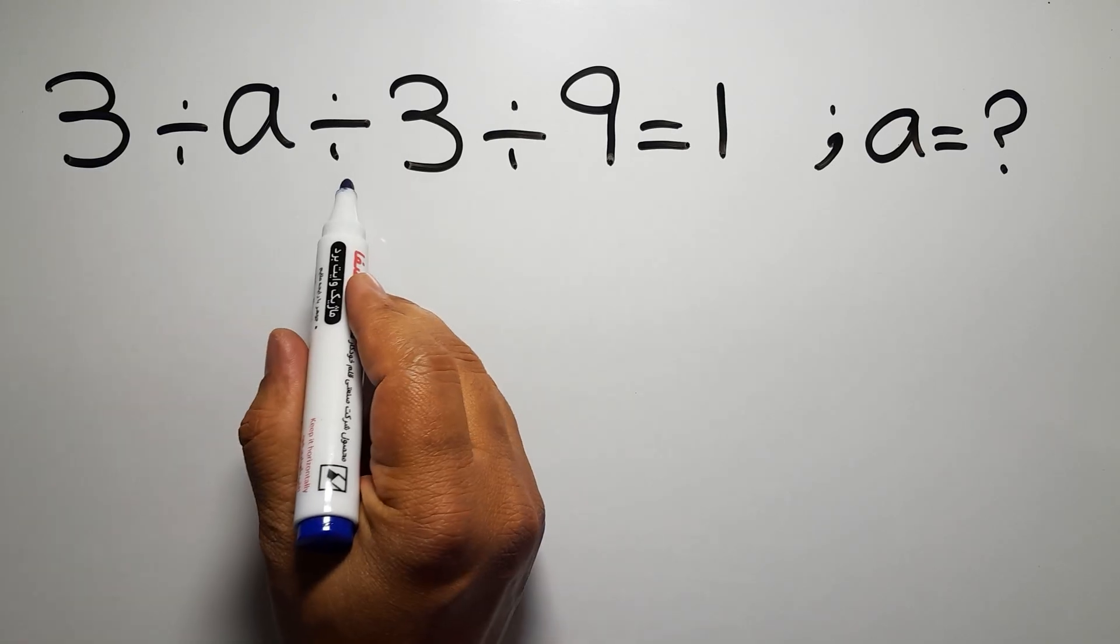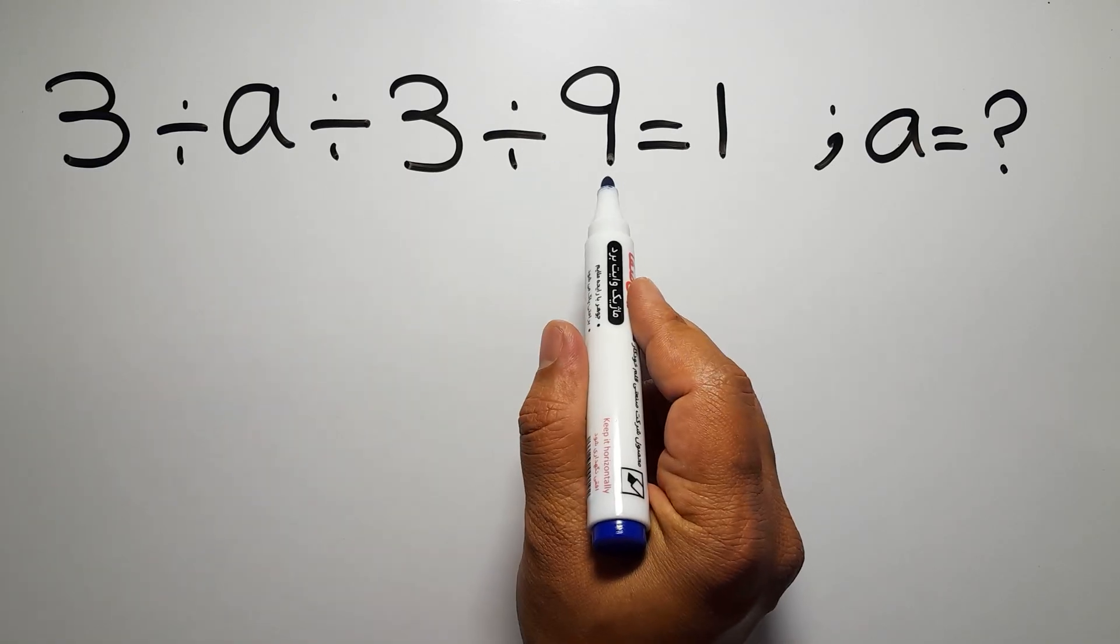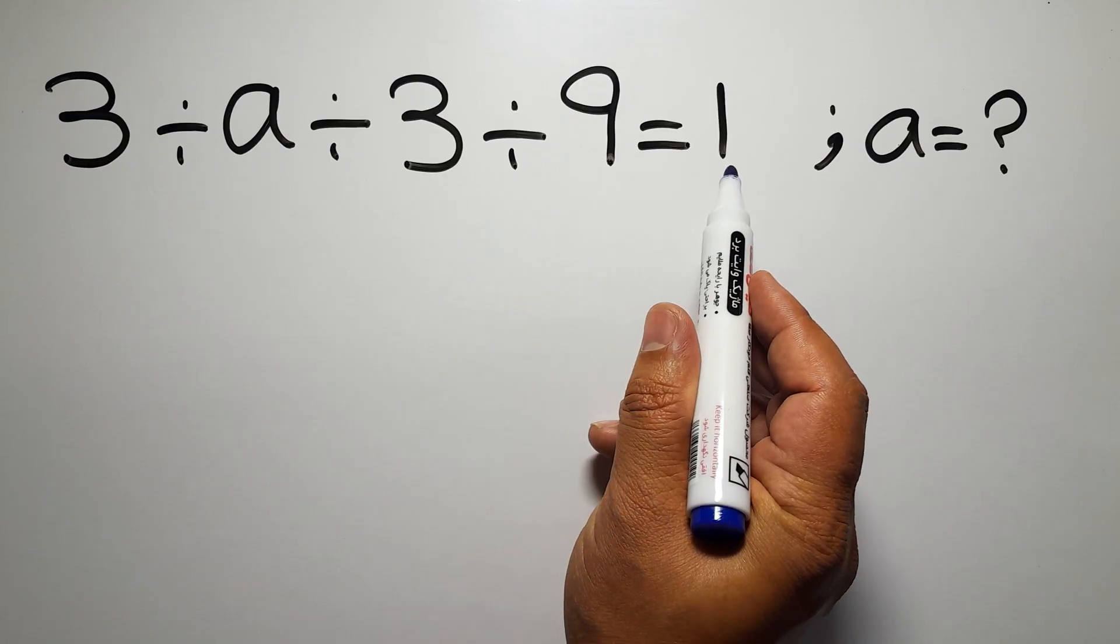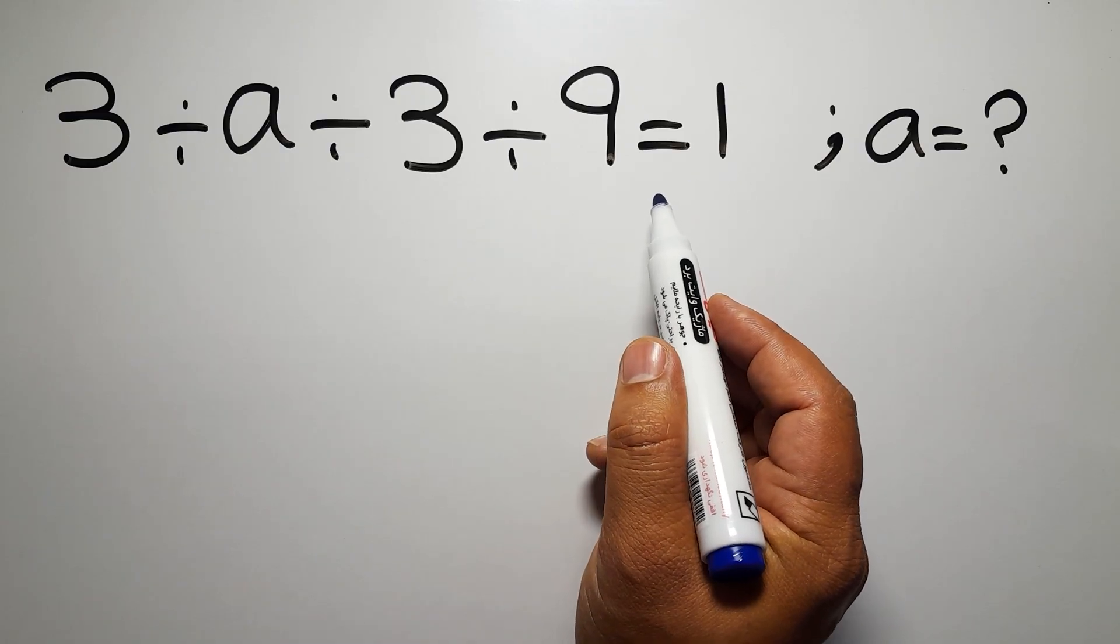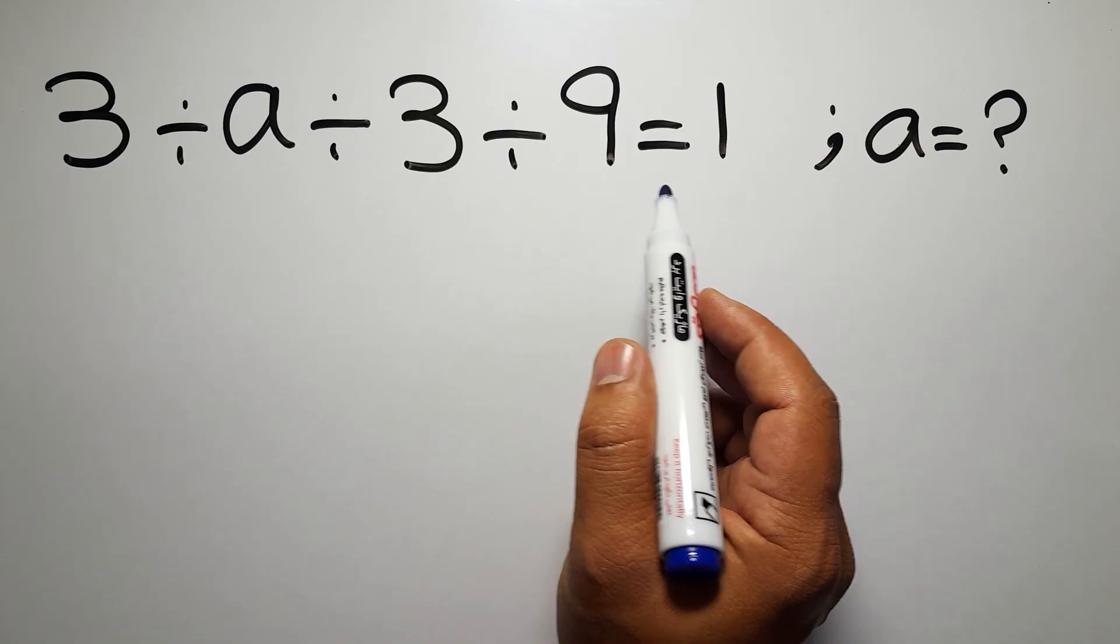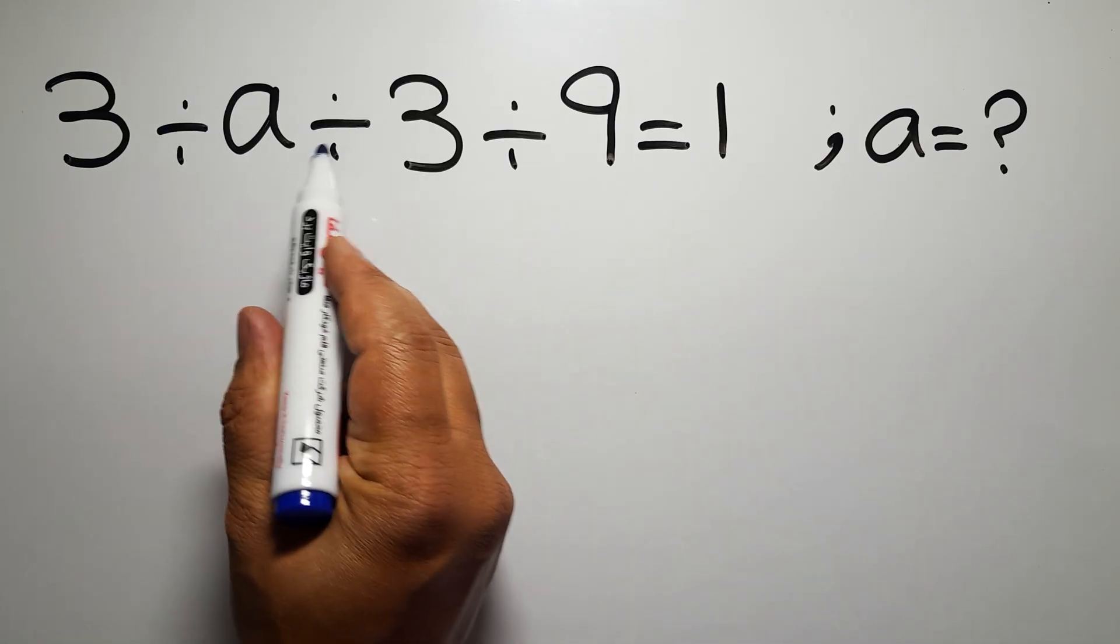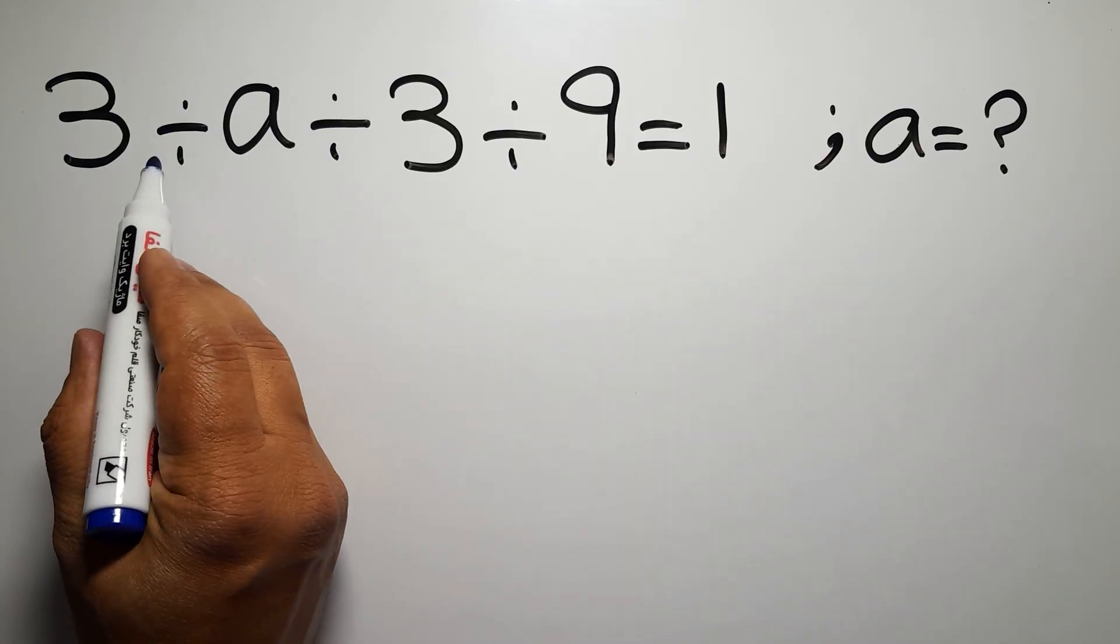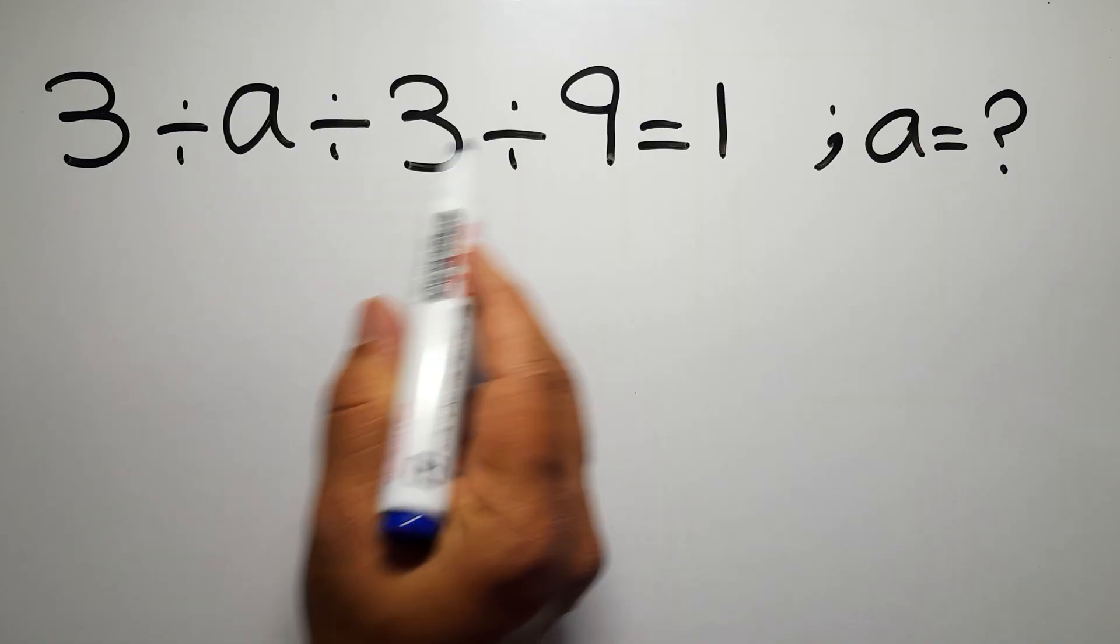3 divided by a divided by 3 divided by 9 equals 1. Our goal is to find the value of a. Are you ready to solve? Let's go. Down to start, on the left hand side we have three divisions, and when we have more than one division in an expression we have to work from left to right.